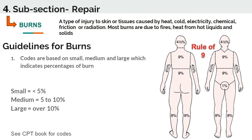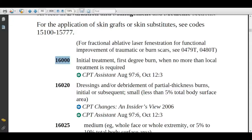Note: the Rule of Nines is used for second degree and third degree burns. What is a second degree burn? A second degree burn is a partial thickness burn, meaning the epidermal layer and part of the dermis are affected. What is a third degree burn? It is also called a full thickness burn, where the top two layers of the skin are totally affected.